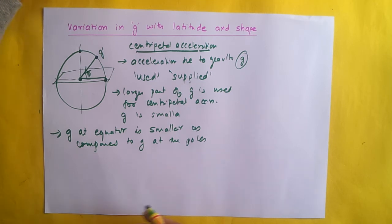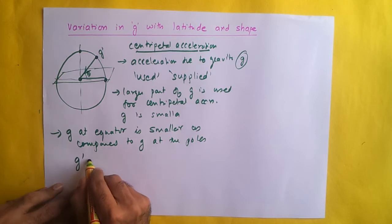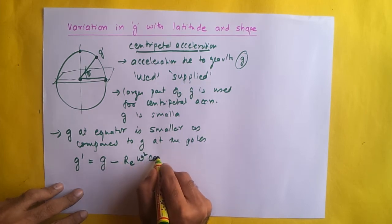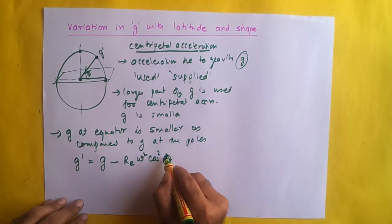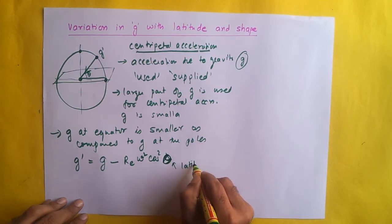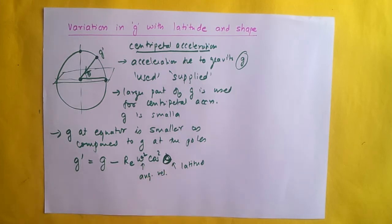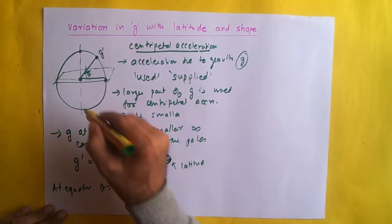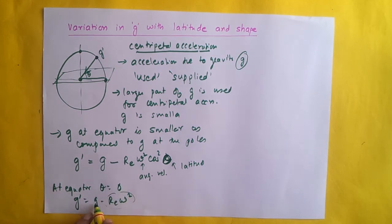Therefore the part used for centripetal acceleration at the equator will naturally be larger as compared to the pole, and therefore g at the equator is smaller as compared to g at the poles. In fact we have an equation: g dash is equal to g minus R_e omega squared cos squared theta, where theta is the latitude and omega is the angular velocity. At the equator theta is zero degree, so cos theta is one and g dash equals g minus R_e omega squared — a larger value is subtracted.